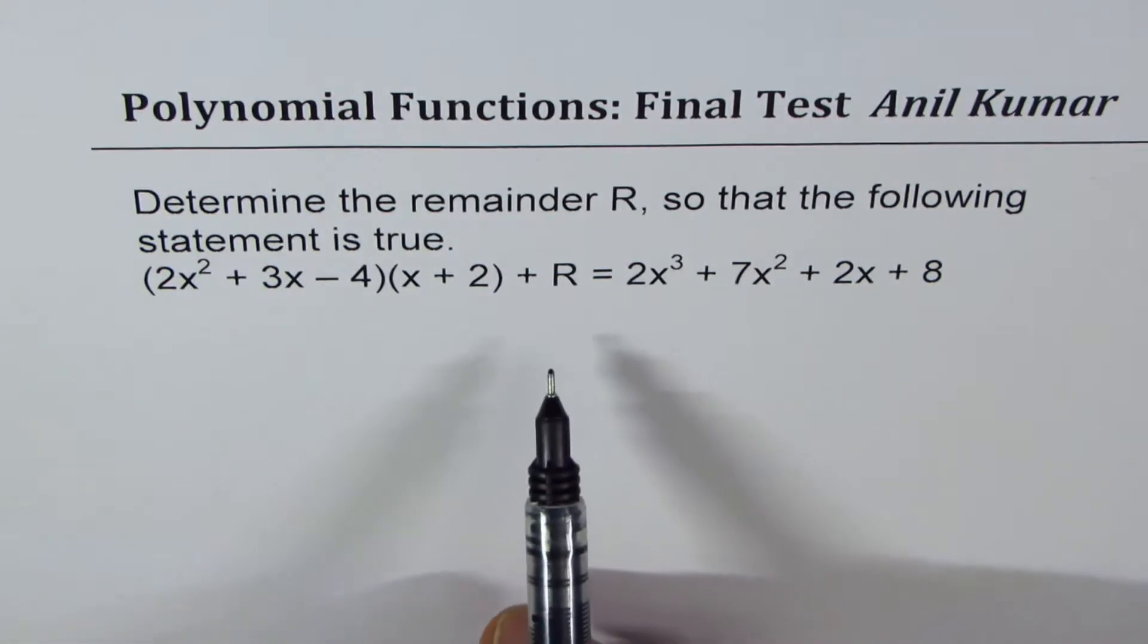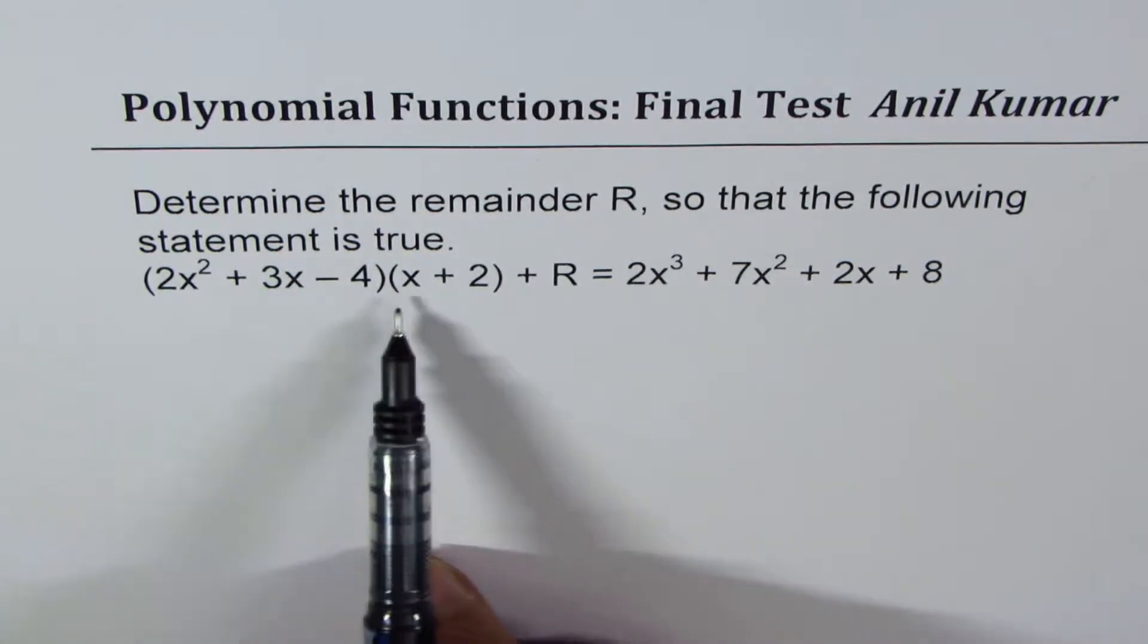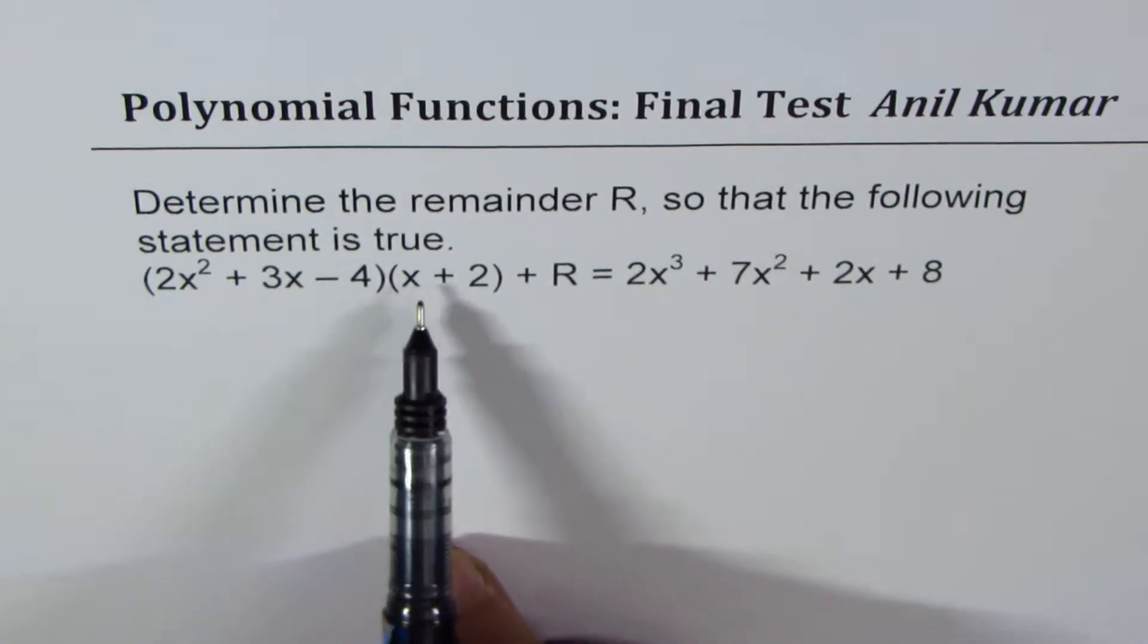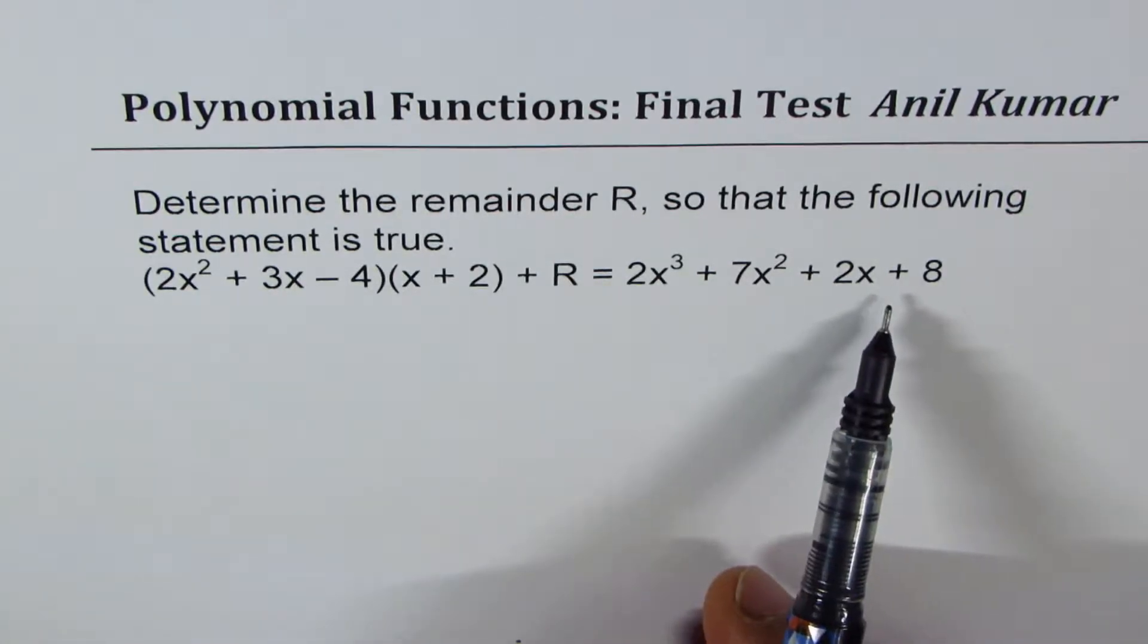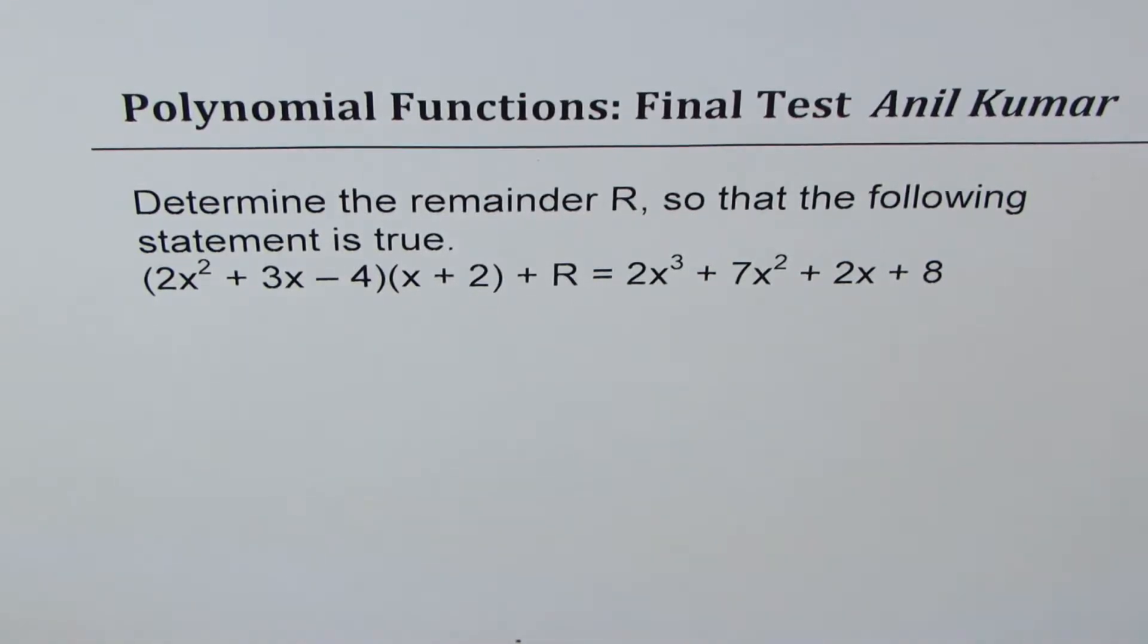Now, one method which I have seen many times students doing is you will open this bracket, multiply them, take them to the right side, combine the like terms and then get the value of R. That is correct method, but it is not the most efficient method which should be adopted.